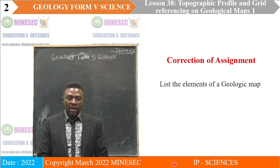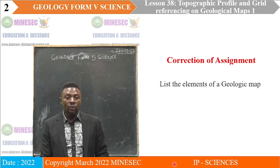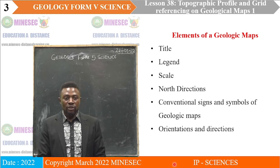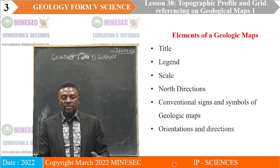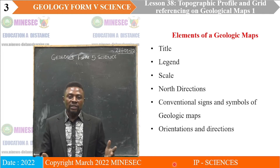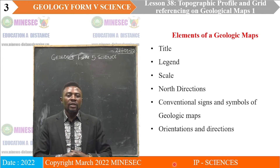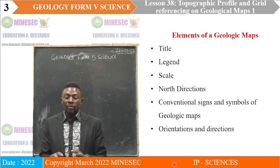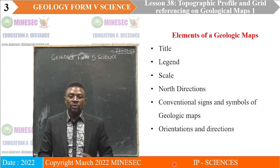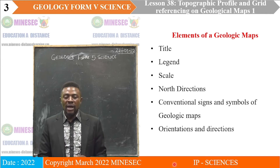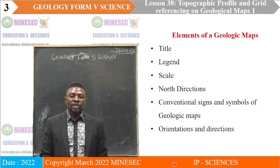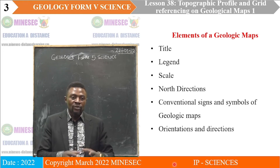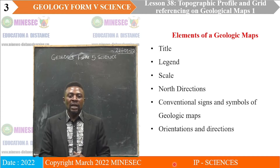The elements of a geologic map — if you had followed the lessons very well, the elements of a geologic map as we described in our last lesson are: the title, which is the name of the map, always found at the top of the map inside the box. We have the legend, which is a column beside the map that represents the features, rocks, and every structure present in a map. We have the scale, which is a ratio that gives us the distance on the map versus the actual distance on the ground.